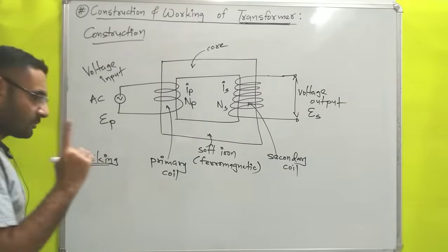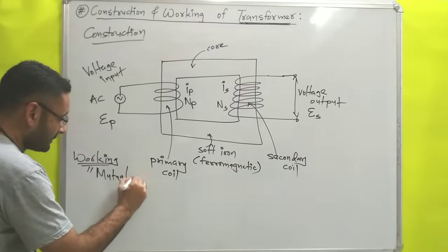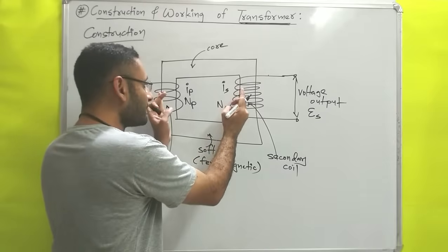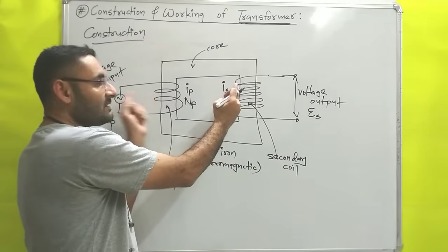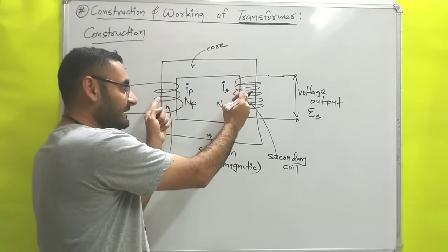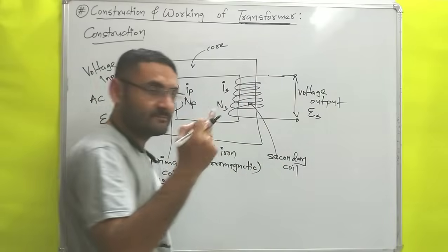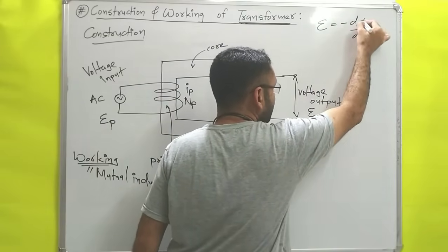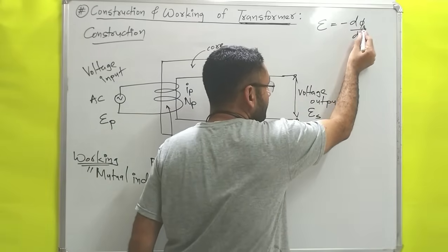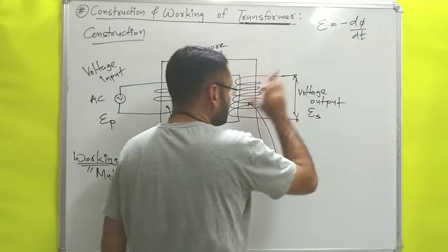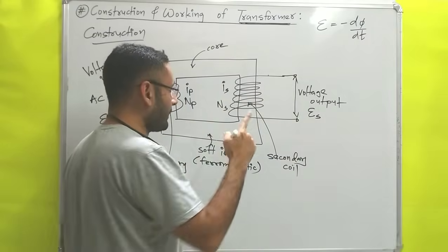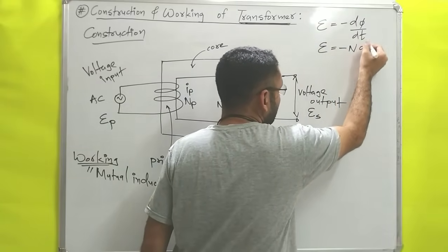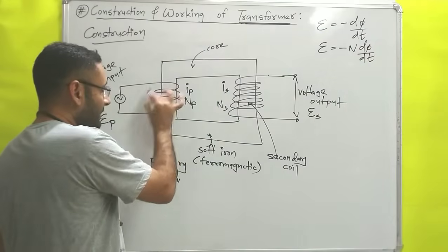All transformers are based on one working principle which is known as mutual induction. Mutual induction means that when we place two coils nearer to each other and supply a variable or changing current from one coil, then in the other coil — say the secondary coil — EMF is induced according to Faraday's second law. That induced EMF is equal to minus dΦ/dt, where Φ is known as flux and dΦ/dt is the rate of change in flux. If there are N turns, then the total induced EMF equals minus N × dΦ/dt.